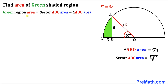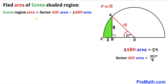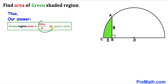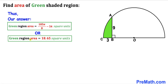For our final step, the green shaded region area equals the sector AOC area minus the triangle ABO area: 185π/8 minus 54. This gives our final answer, which is approximately 18.65 square units. Thanks for watching and please subscribe to the channel for more exciting videos.